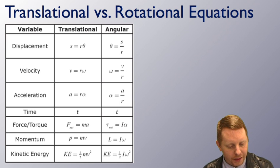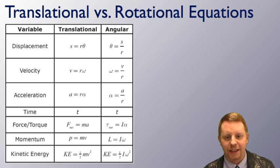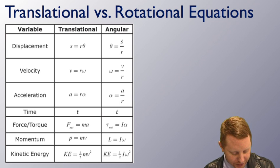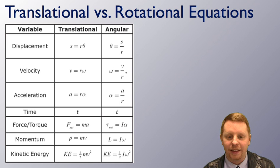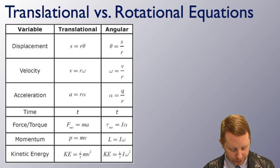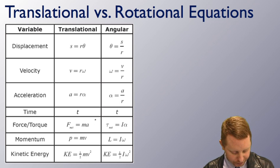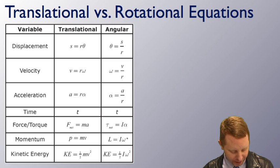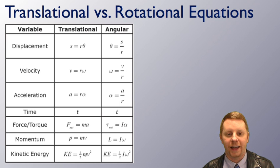We can compare all translational values and equations to their rotational analogs. Displacement: s = rθ, or angular displacement θ = s/r. Velocity: v = rω, or ω = v/r. Acceleration: a = rα, or α = a/r. Time is the same in both worlds. Newton's second law: net force equals mass times acceleration; net torque equals moment of inertia times angular acceleration. Linear momentum p = mv; angular momentum L = Iω. And finally, translational kinetic energy = ½mv², rotational kinetic energy = ½Iω².